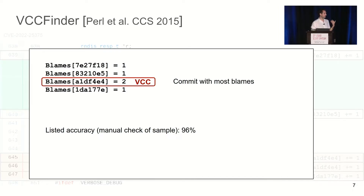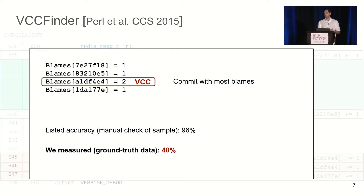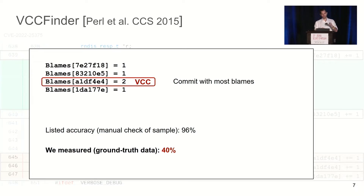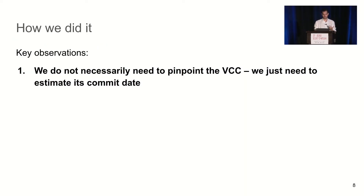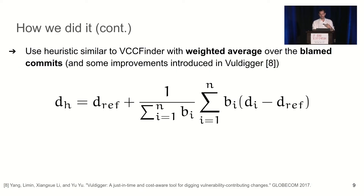So we considered using this approach, but when we calculated the accuracy using high-quality ground truth data from Linux developers and the Ubuntu security team, we found that for the same dataset this approach only yields 40% accuracy. We cannot readily use it. However, we noticed we don't necessarily need to pinpoint the exact VCC — we just need to estimate the commit date. So instead of taking the commit with the most blames, we compute a weighted average of the commit ages based on the number of blames each commit received.